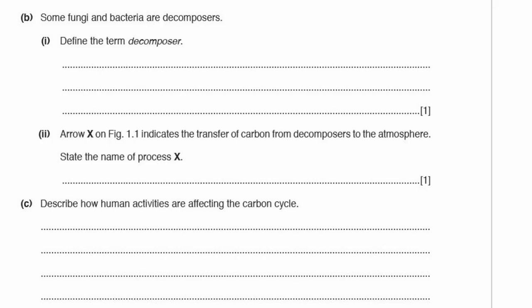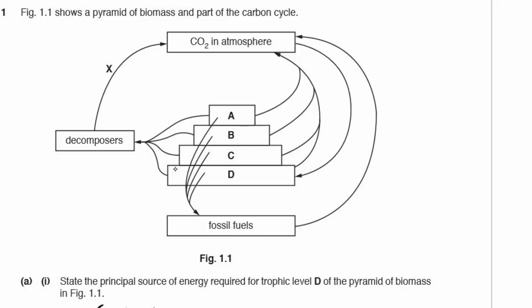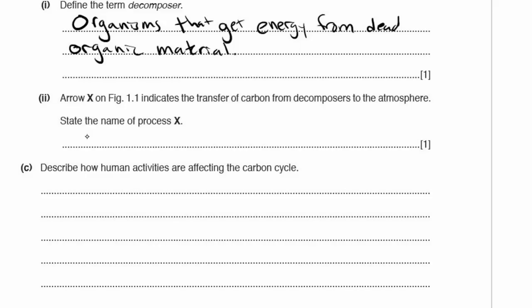Some fungi and bacteria are decomposers. Define the term decomposer: a decomposer is an organism that gets its energy from dead organic material. Arrow X on figure 1.1 indicates the transfer of carbon from decomposers to the atmosphere — name the process. At every level, organisms not eaten by the next level are broken down by decomposers, which then produce CO₂ into the atmosphere. That process is respiration.